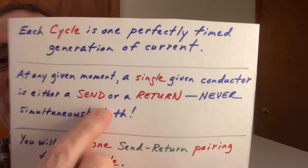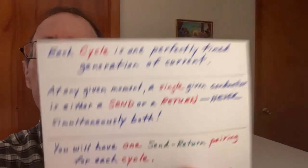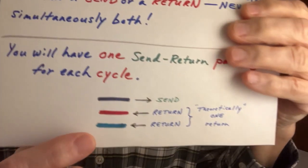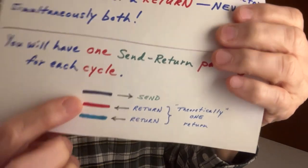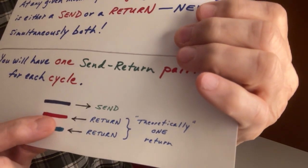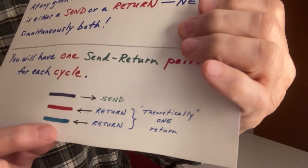At any given moment, a single given conductor is either a send or a return, never simultaneously both. Now this is the key to understanding and accepting the term triple cycle. You will have one send-return pairing for each cycle. Let's say you have a send here on black, then your red and blue would be your returns.